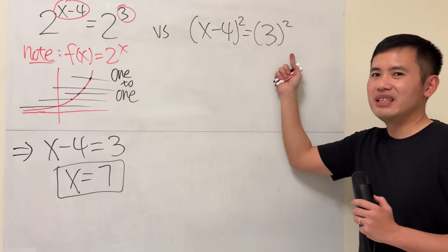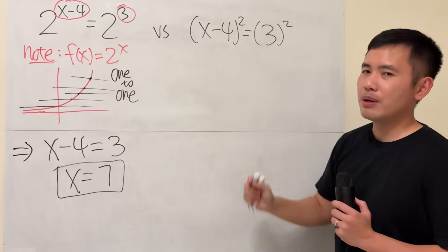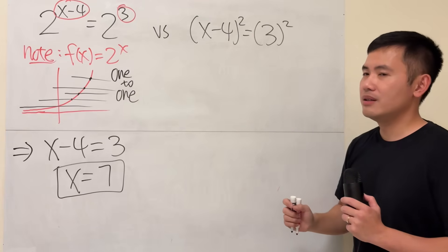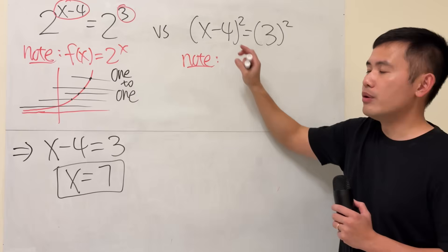But if you take a look at this one right here, we have x minus 4 to the second power. In fact, this is the quadratic function. So let's take a look. Note, this is the input now.